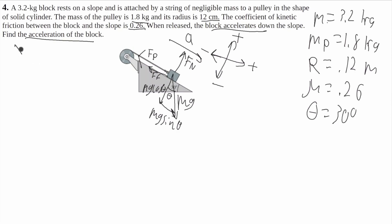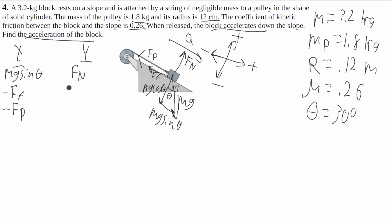I'm going to draw my forces in the X and in the Y. In the X, I'm going to have Mg sine of theta, negative force of friction, and negative force of the pulley. That's it for my X. In the Y, I'm going to have the normal force Fn and negative Mg cosine of theta. The acceleration in the Y will be 0, because the block won't move up into the air or into the ground.